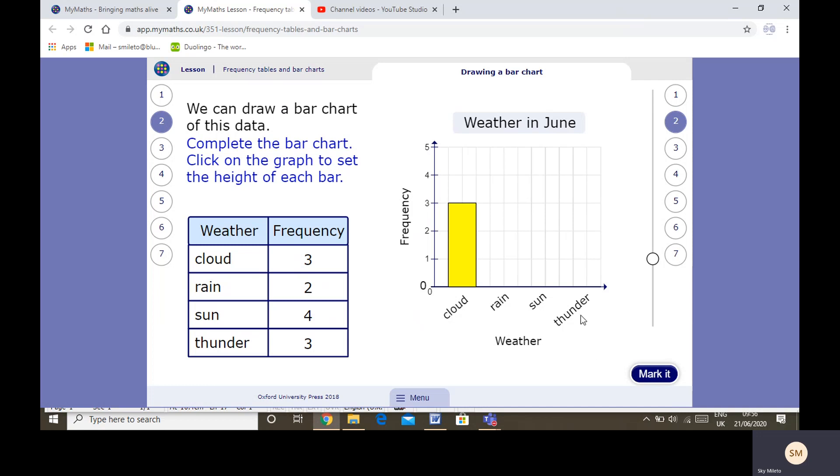So you can see 3 days it was cloud, 2 days it rained. We know 4 days it was sun, and 3 days thunder.